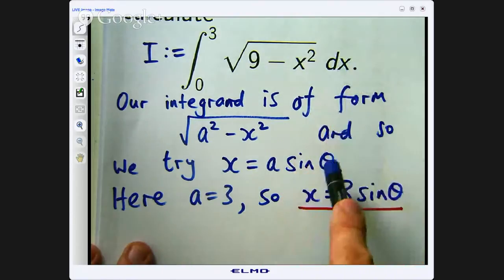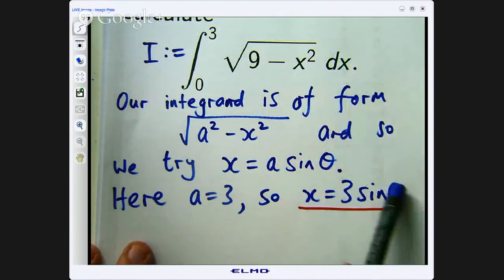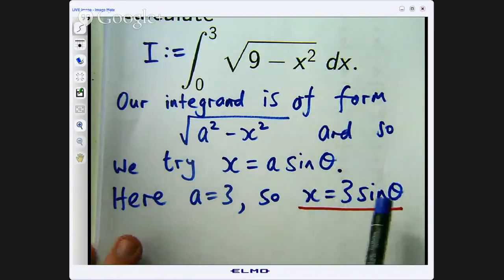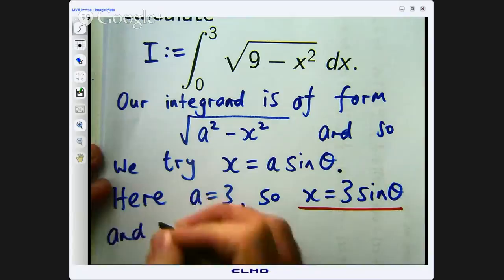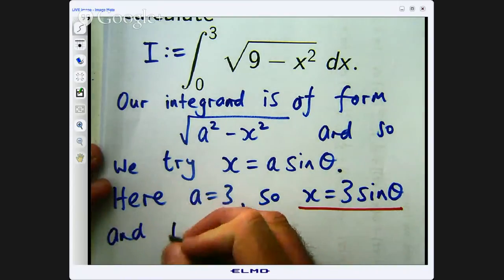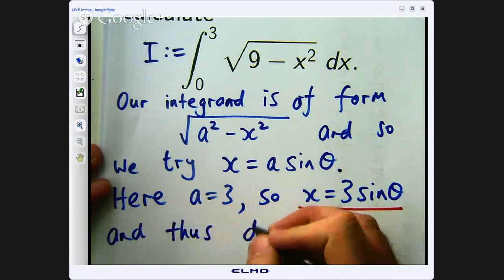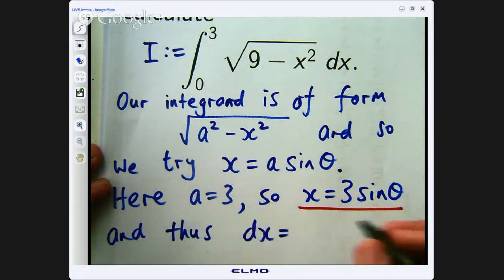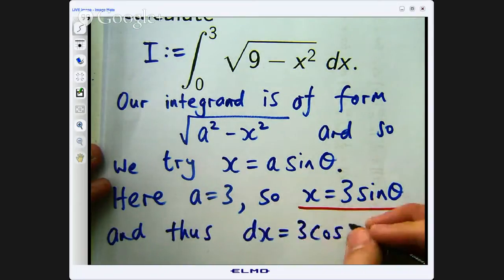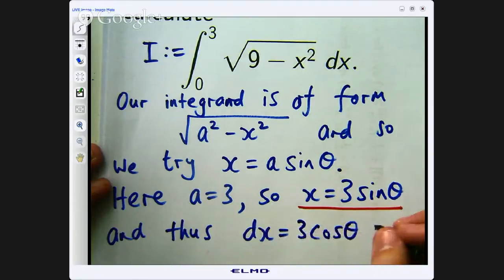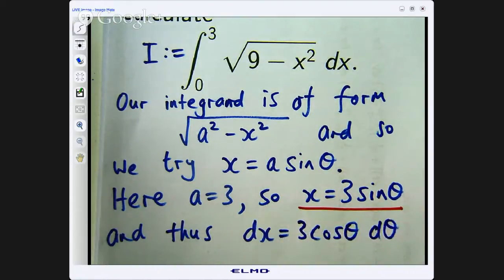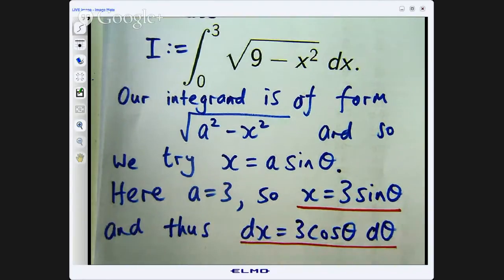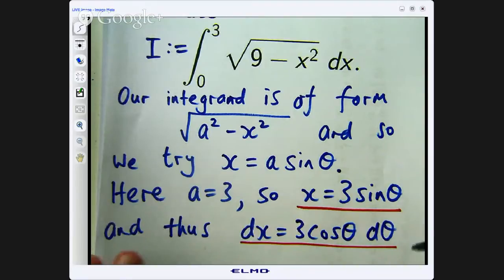We need to replace this differential this dx so if I say differentiate both sides of this the x equals 3 sine theta. I will have dx d theta equals 3 cosine theta. So let us write that down so dx d theta equals 3 cosine theta or equivalently dx equals 3 cosine theta d theta. Alright well we are almost ready to perform our substitution.